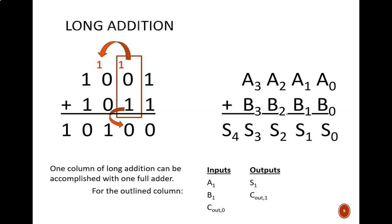For any one column, only three bits need to be added: the two given values and a carry in bit. As we saw last video, adding three bits is the job of a full adder.